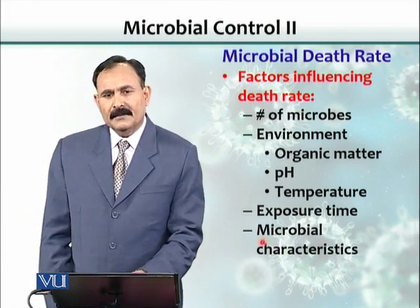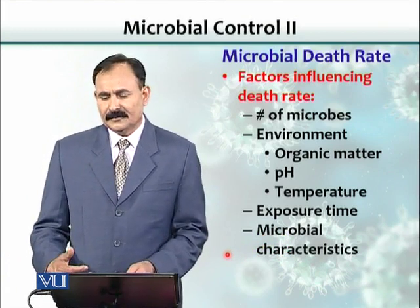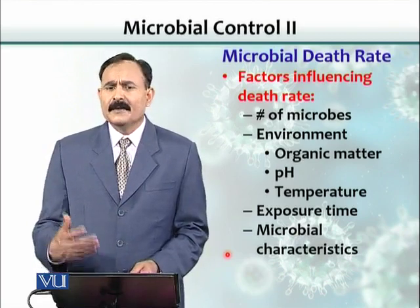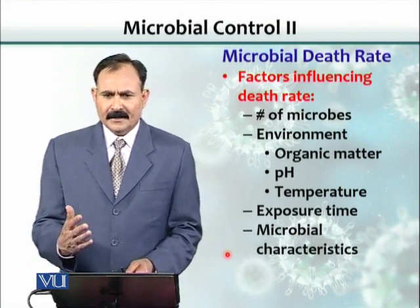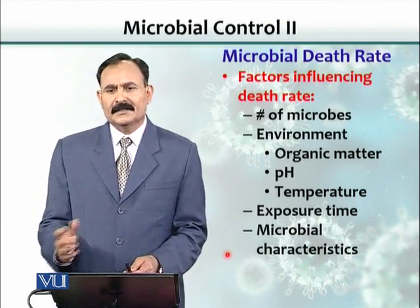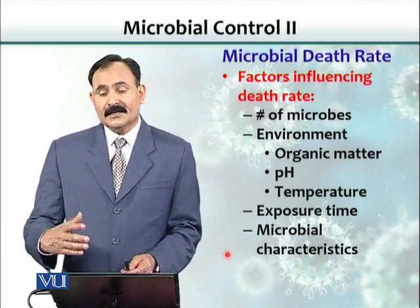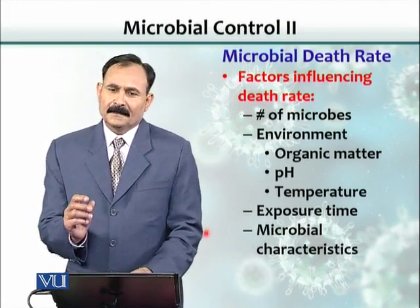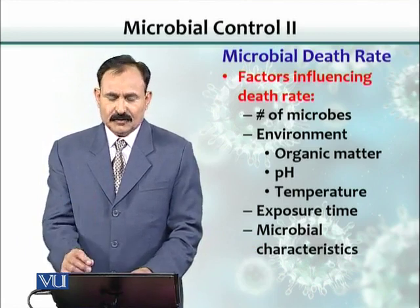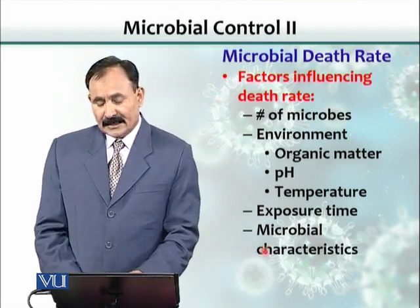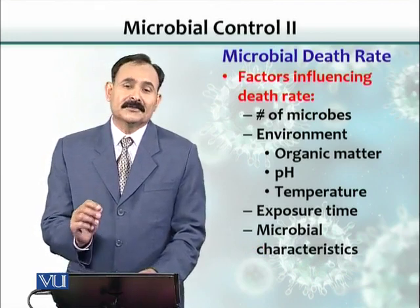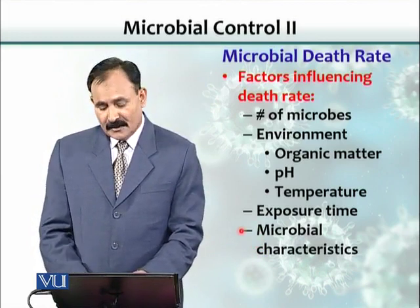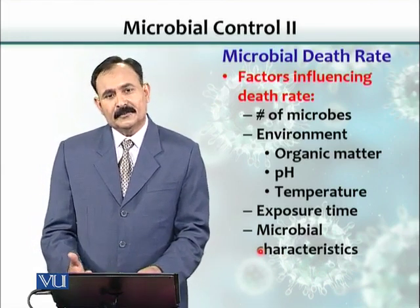The result also depends on microbial characteristics. If the bacteria have different compositions, for example Mycobacterium tuberculosis versus E. coli — because the composition of these two bacteria is totally different — if you treat these two organisms with the same chemical, you would see that it would be harder to kill Mycobacterium with that concentration compared with E. coli. So microbial characteristics also play an important role.